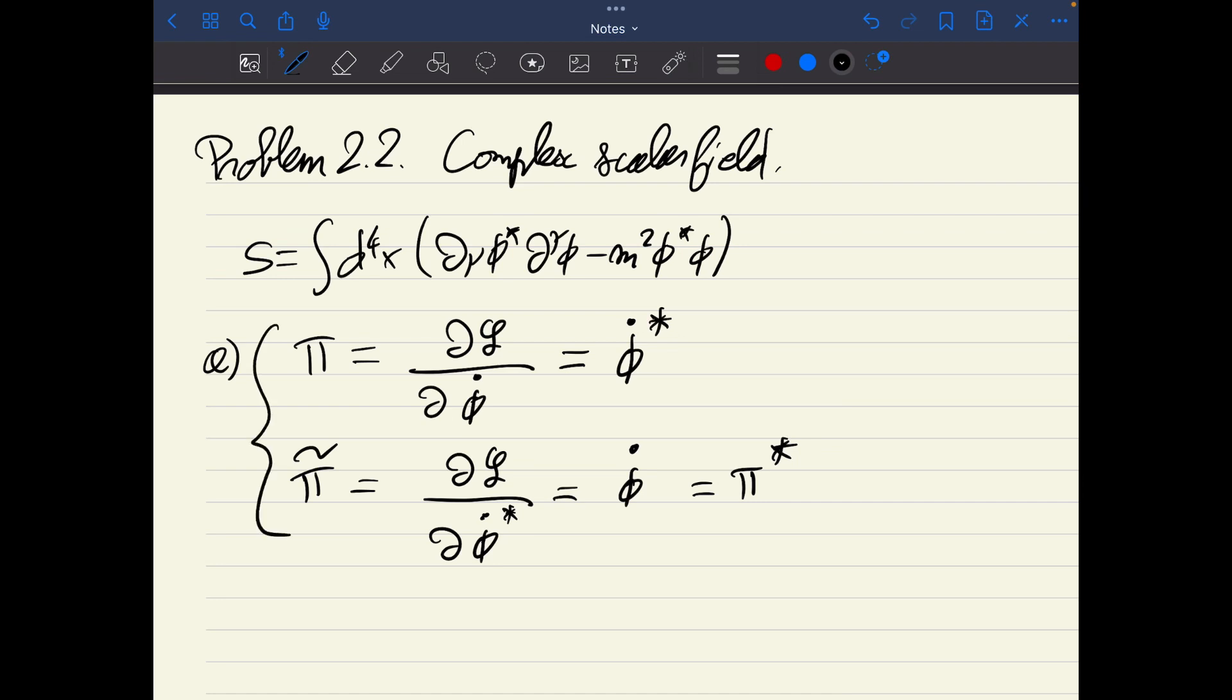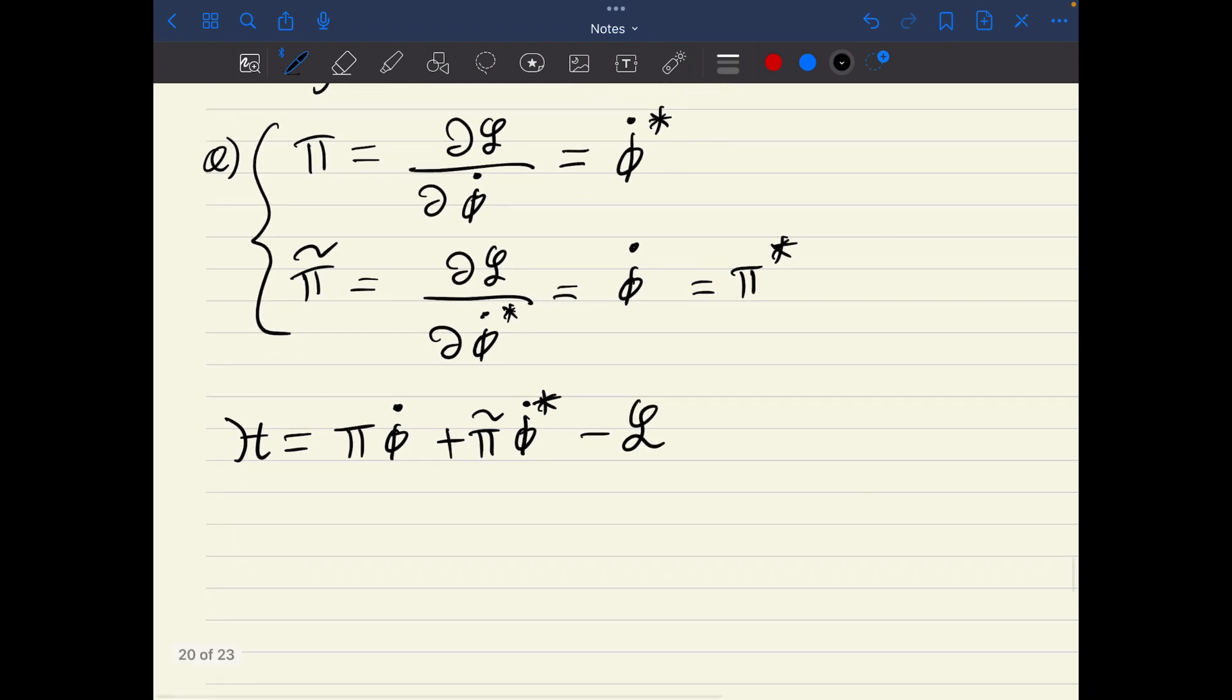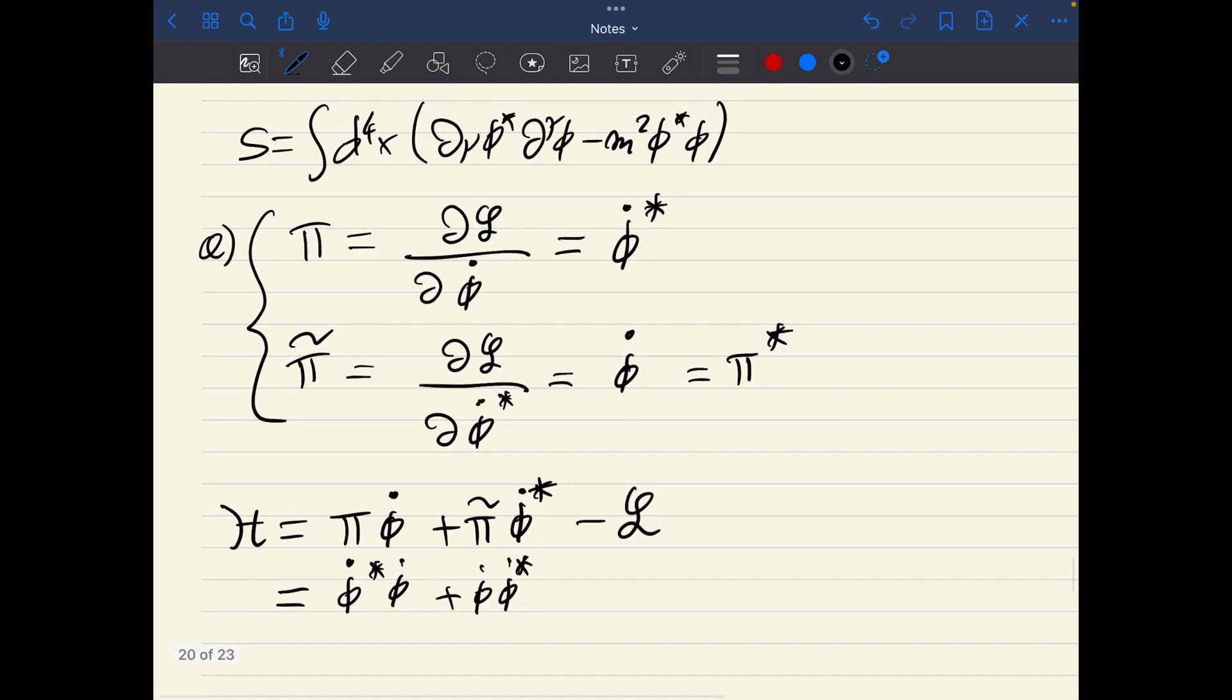With that, we can construct the Hamiltonian density, which is simply defined as the sum over the product of the momenta and the associated degrees of freedom. So pi phi dot plus phi tilde phi dot star minus the Lagrangian density. If I write everything in terms of phi, pi is just phi dot star.